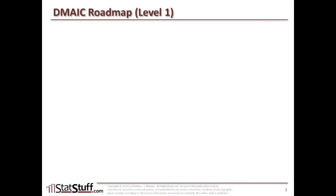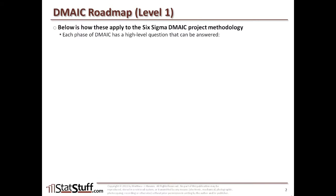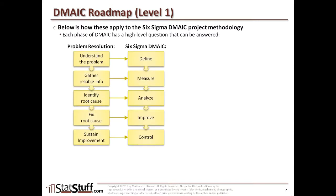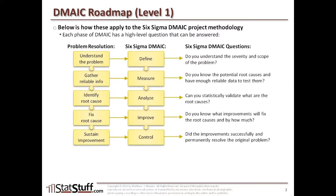Let's begin again by looking at the five basic steps for resolving a problem. Previously, we introduced those five basic steps, then applied them to the DMAIC methodology — the five phases of the Six Sigma DMAIC methodology. Last time, we also talked about the high-level questions we would ask for each of those phases in the DMAIC methodology.